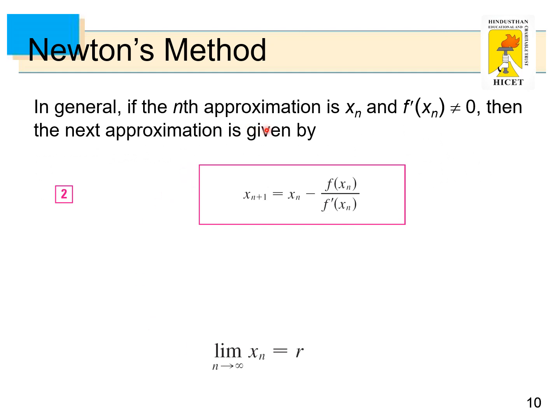In general, if the nth approximation is xn and f'(xn) is not equal to 0, then the next approximation is given by x_{n+1} = xn - f(xn)/f'(xn).